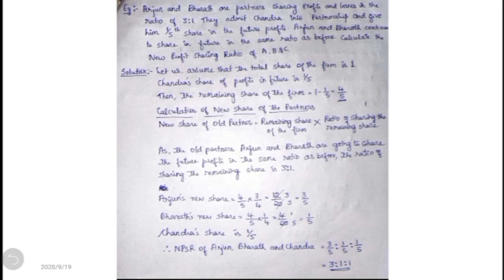We calculate the new profit sharing ratio by the following steps. First, we assume the total share of the firm is 1. Then we write the share of the new partner — Chandra's share of profit in future is 1/5. Thereafter we calculate the remaining share of the firm: remaining share equals total share minus share of the new partner, so 1 minus 1/5 gives a remaining share of 4/5.